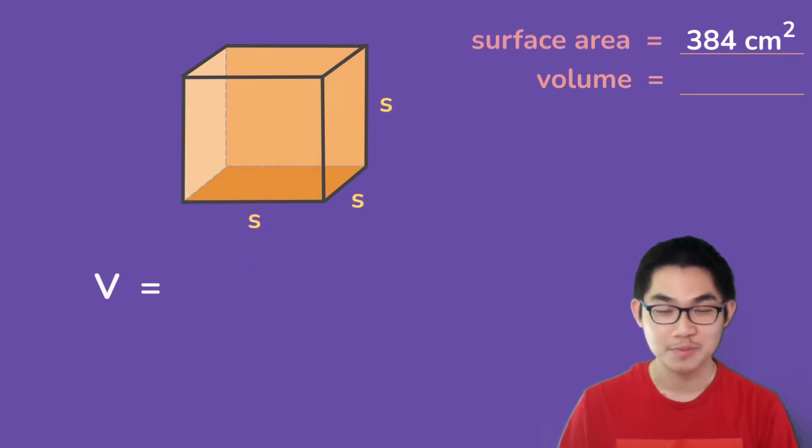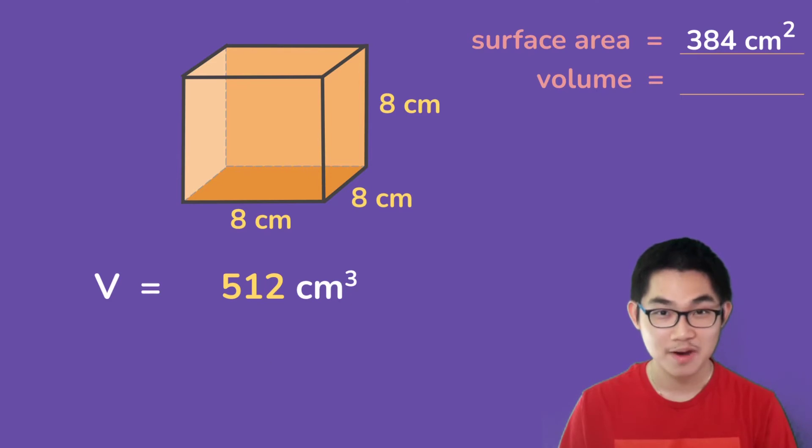How do we calculate the volume, the volume of a cube? The formula to calculate the volume is s times s times s, which is the same thing as s to the power of three. Now I'm going to explain where this formula comes from, but for now let's use this formula. If each side is eight centimeters, then the volume is eight to the power of three, which is 512 centimeters to the power of three.